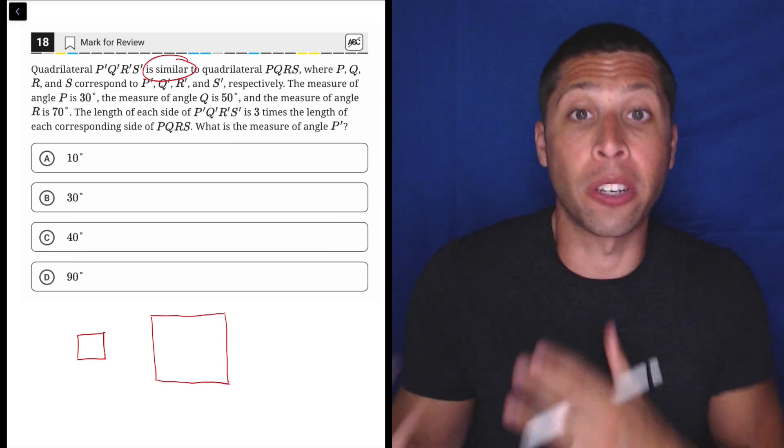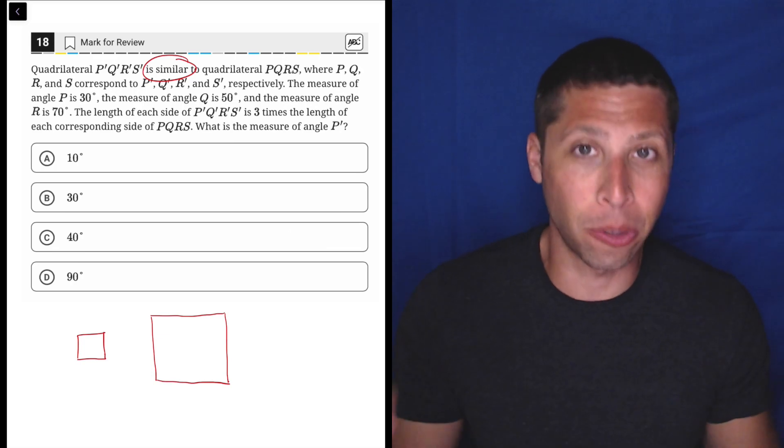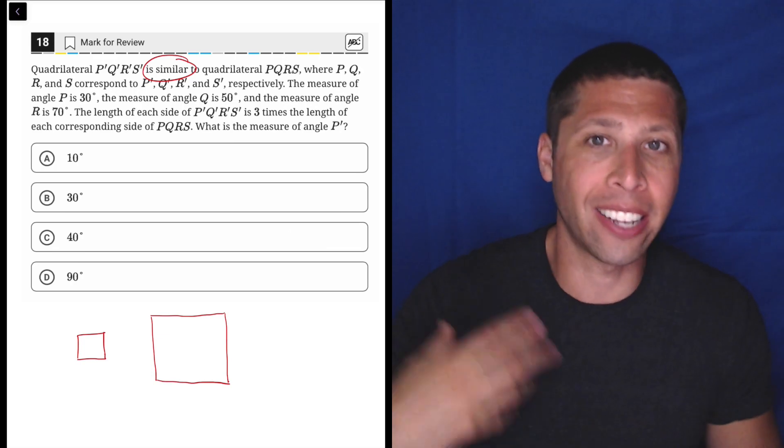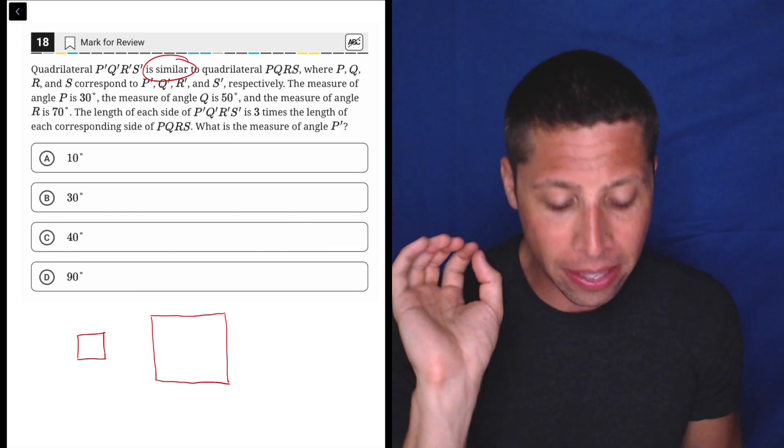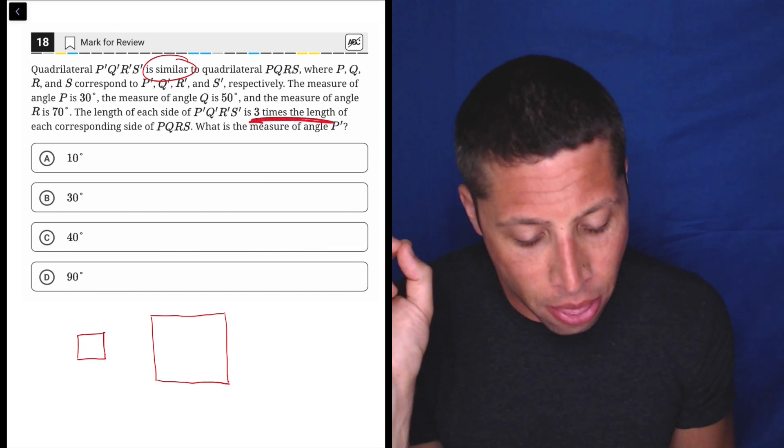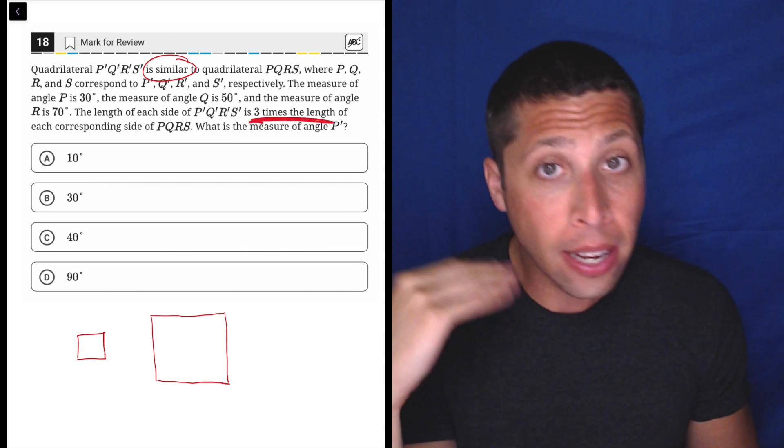It's kind of like you reduce a fraction - you can reduce that square to a smaller size, but it still is the same overall shape. So why does that matter? Well, it's basically telling me that this fact here does not matter.